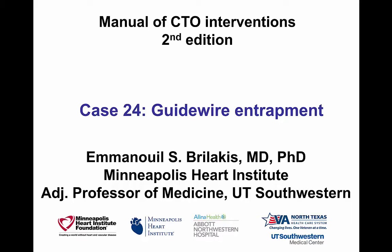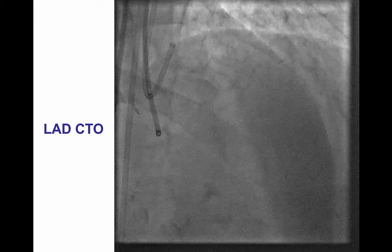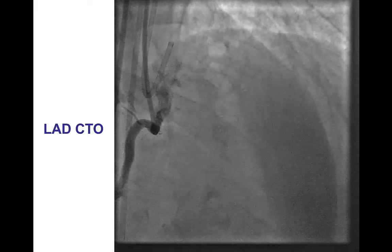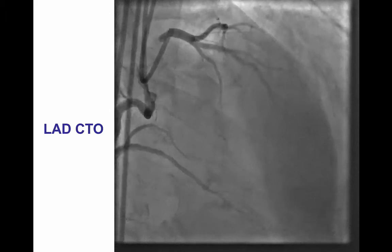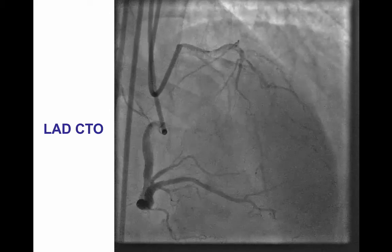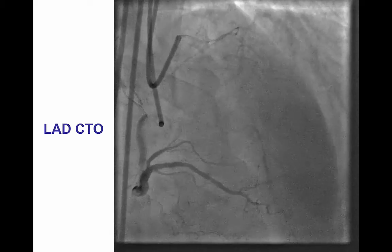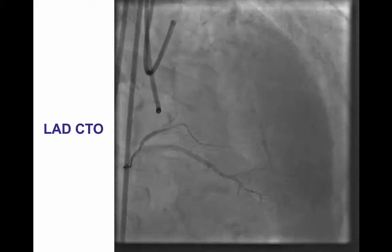Hi, this is Manos Berlakis from the Minneapolis Heart Institute presenting case 24 for the second edition of the Manual of CTO Interventions. This is a case of guidewire entrapment during antegrade subintimal reentry attempts. This was a patient who presented with an LAD CTO, single vessel occlusion.